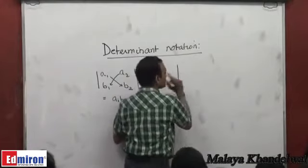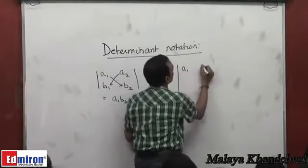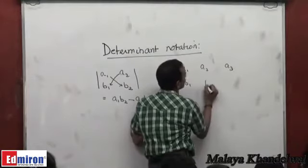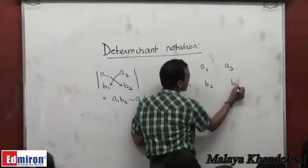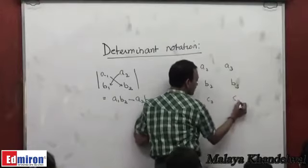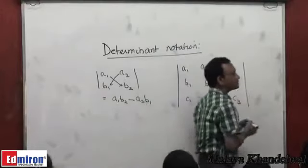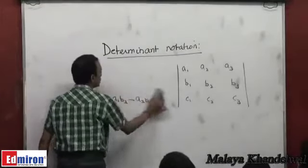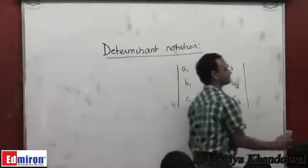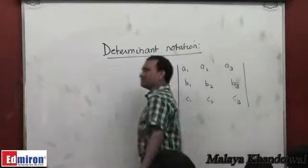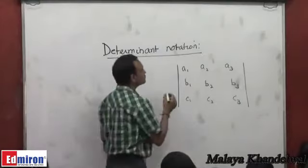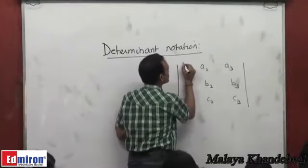Then we have a 3 by 3 determinant which is like a1, a2, a3. This is 3 rows and 3 columns referred to as a 3 by 3 determinant. Now, to find the value of this determinant, what you do is you assign signs here.